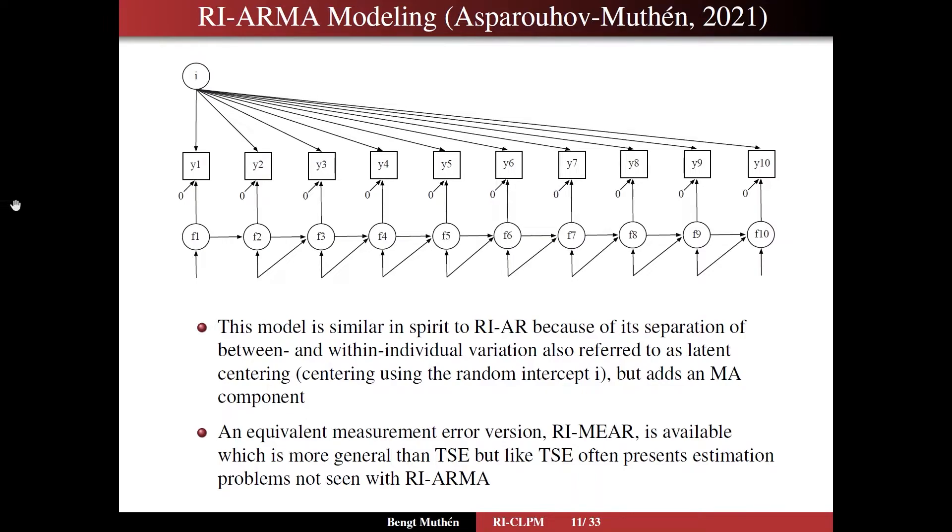So this model is similar in spirit to RI-AR, because of its separation of between and within individual variation, also referred to as latent centering. That is centering using the random intercept I, but it adds this MA component to the model. And that has proven, in our investigations, to be a useful addition, a necessary addition, to fit models well when you have many time points, when you get closer up to 10 time points.